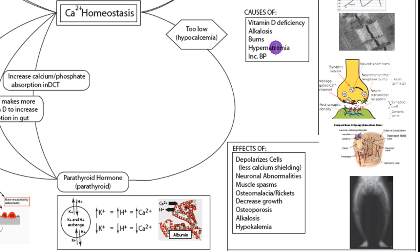Hypernatremia can also cause hypocalcemia because calcium reuptake is dependent on sodium reuptake in the proximal convoluted tubule of the kidney. In hypernatremia, the kidney is less able to pull sodium from the filtrate into the blood. This means less water follows sodium, and less calcium can follow, resulting in less calcium reabsorption and causing hypocalcemia.